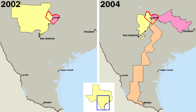The city manager is a response to the increasing complexity of urban problems that need management ability not often possessed by elected public officials. The answer has been to entrust most of the executive powers, including law enforcement and provision of services, to a highly trained and experienced professional city manager. Under this plan, a small elected council makes the city ordinances and sets policy, but hires a paid administrator, also called a city manager, to carry out its decisions. The manager draws up the city budget and supervises most of the departments. Usually, there is no set term; the manager serves as long as the council is satisfied with his or her work.